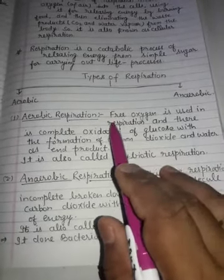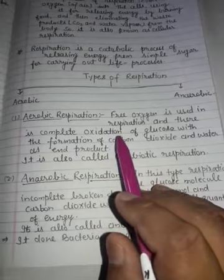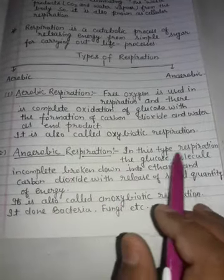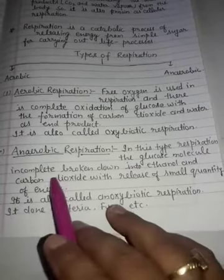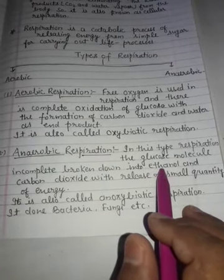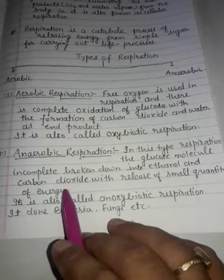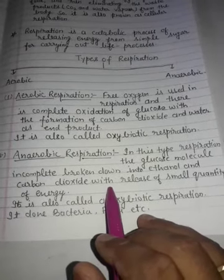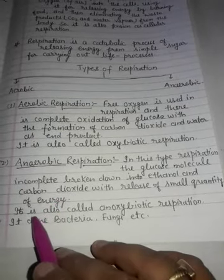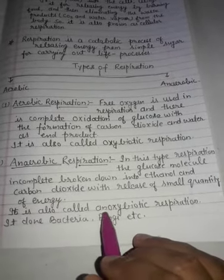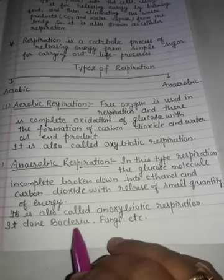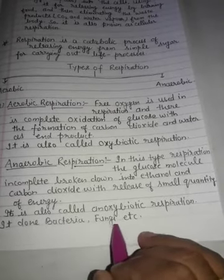Anaerobic respiration: in this type of respiration, the glucose molecule is incompletely broken down into ethanol, another name is ethyl alcohol, and carbon dioxide with release of small quantity of energy. It is also called anoxybiotic respiration. It is done by bacteria, fungi, etc.